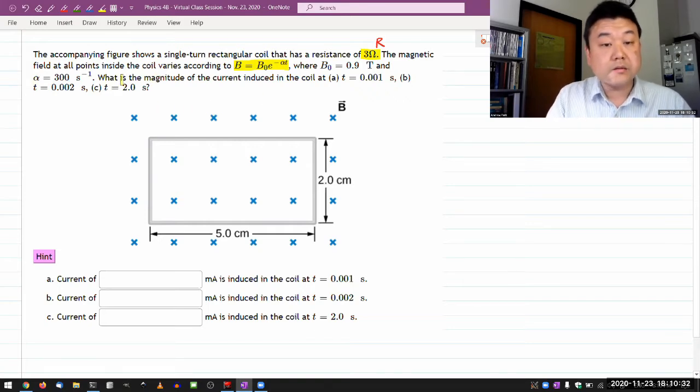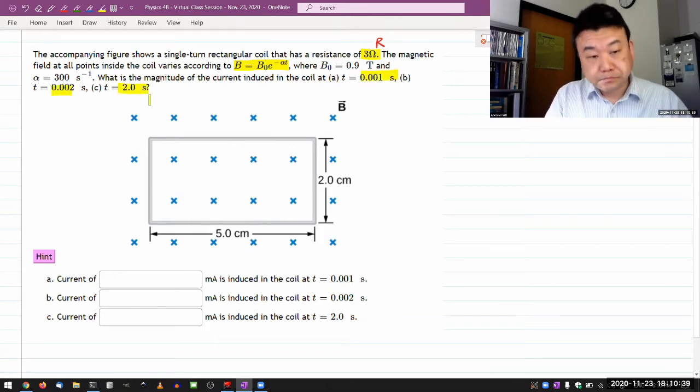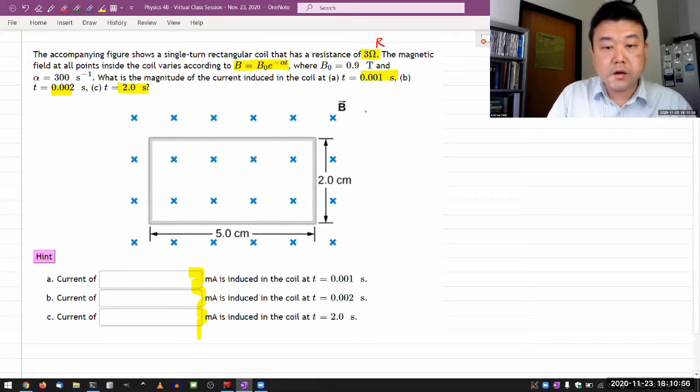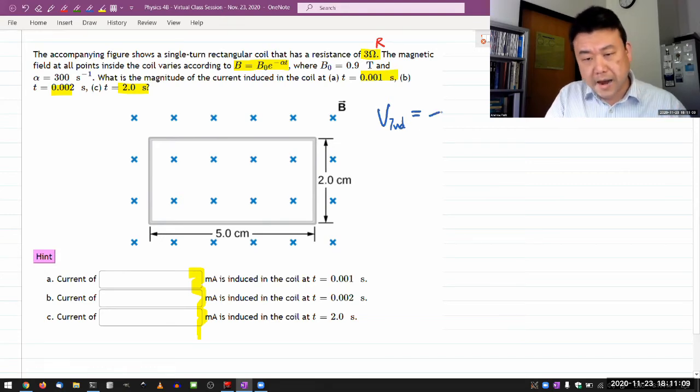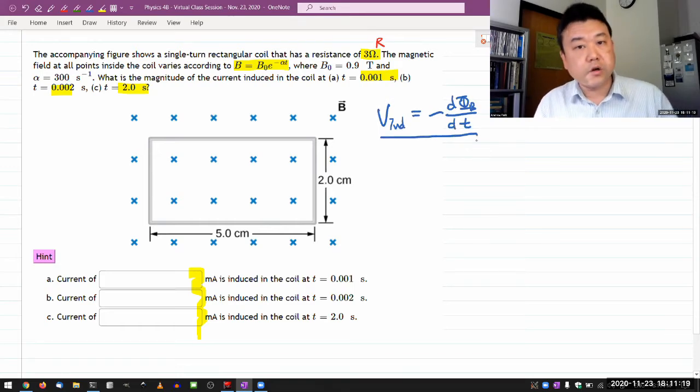It's asking what is the magnitude of the current induced in the coil at these different times. So analytically, the expression will be the same. These are just different numbers. When you consider Faraday's law, what it gives you is the induced voltage if you know the rate of change of magnetic flux. The induced voltage equals minus the rate of change of magnetic flux. So it gives you voltage directly, it doesn't give you the current directly.